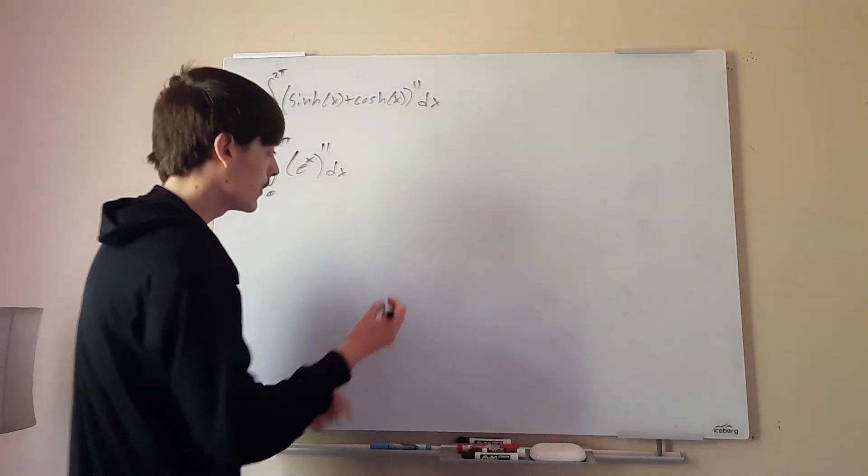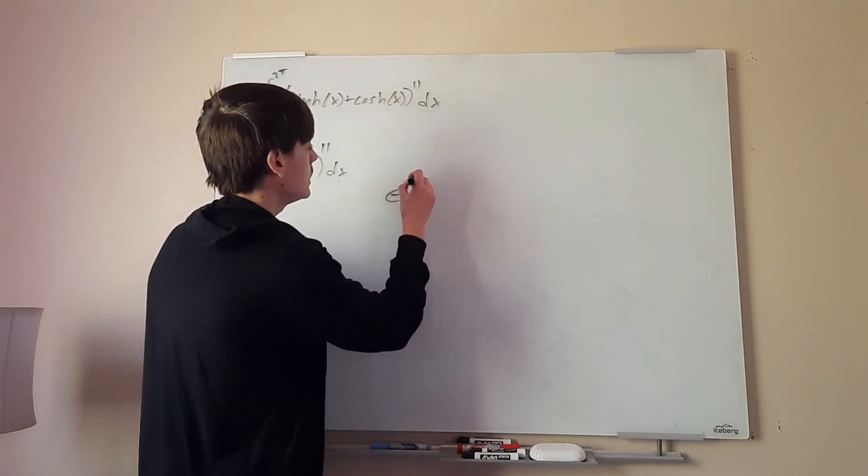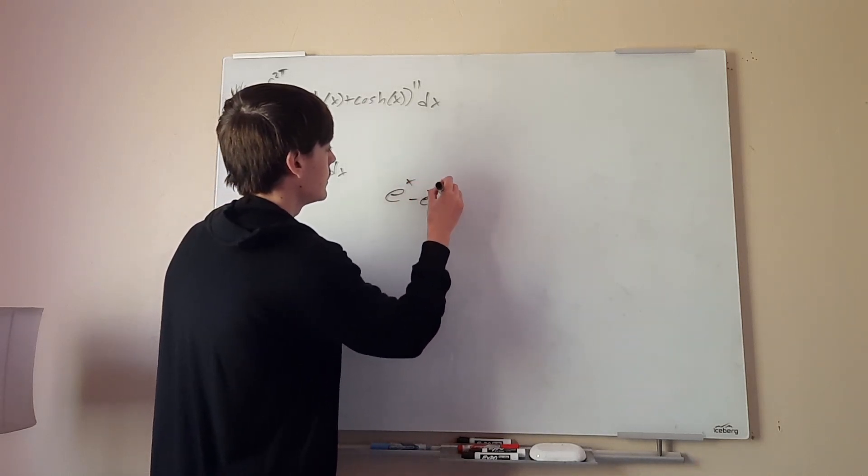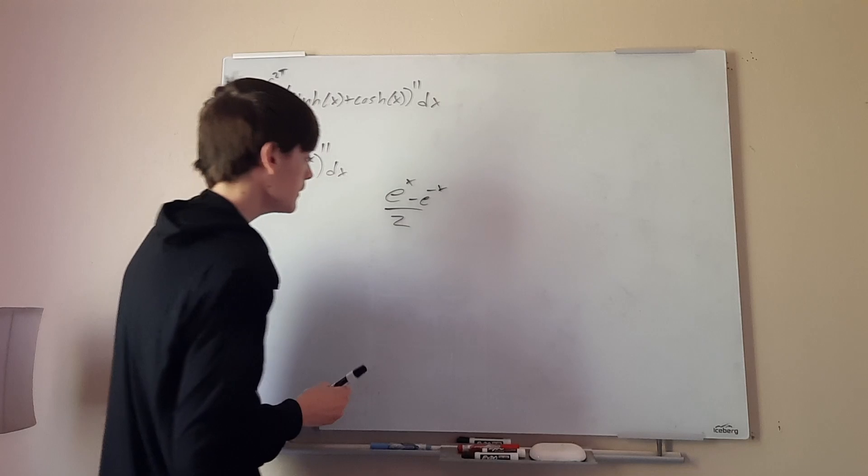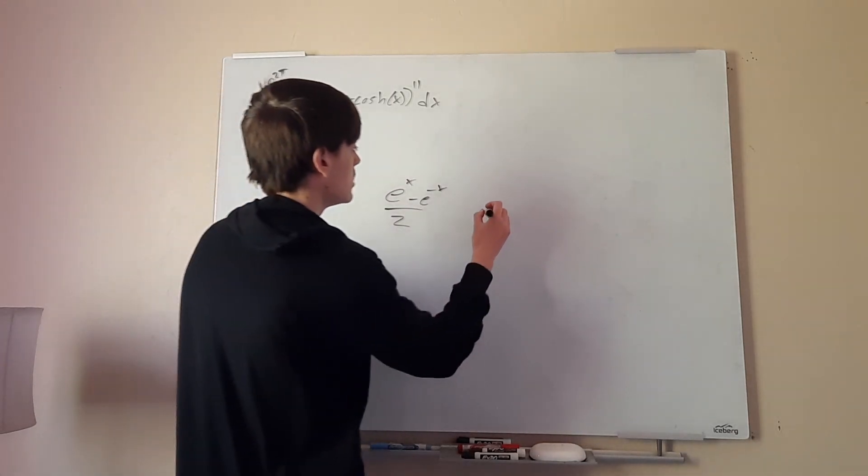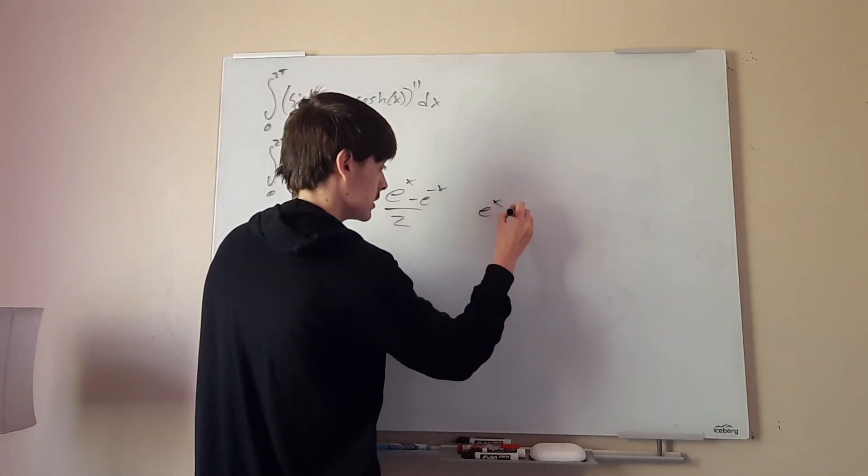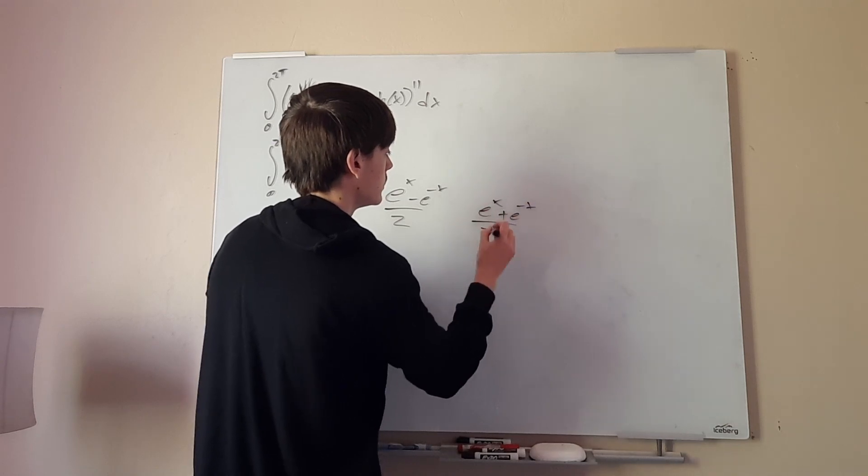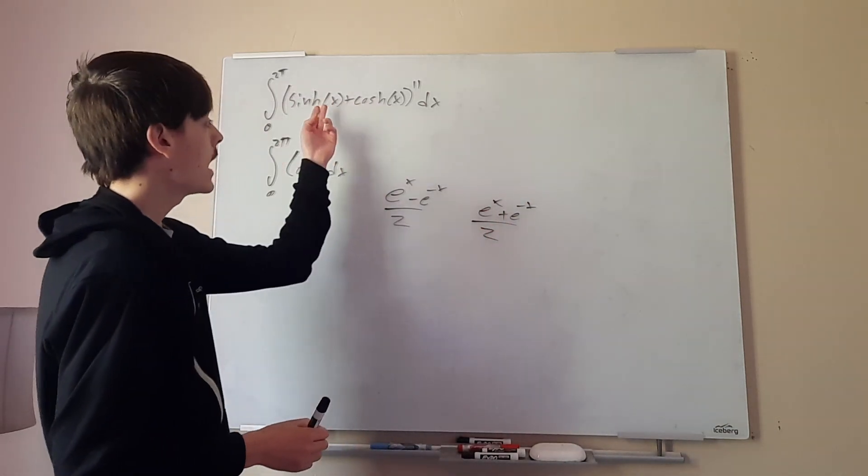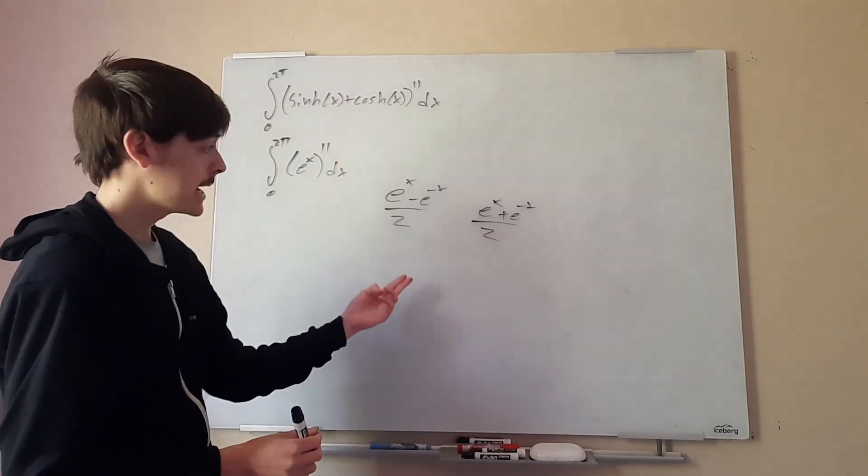Now sinh(x), if you remember, that is equal to (e^x - e^(-x))/2. cosh(x) is equal to (e^x + e^(-x))/2. So if we're adding sinh and cosh, that's the same thing as adding these.